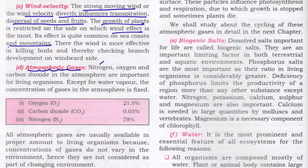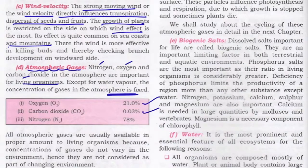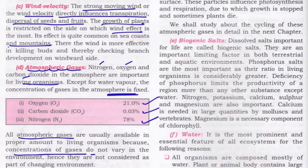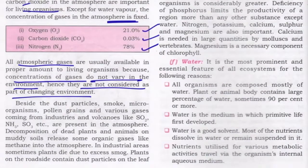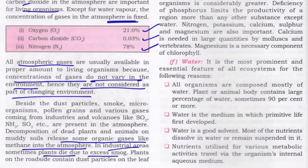Atmospheric gases — nitrogen, oxygen, and carbon dioxide in the atmosphere are important for living organisms. Except for water vapor, the concentration of gases in the atmosphere is fixed: oxygen is 21%, carbon dioxide is 0.03%, and nitrogen is 78%. Since these concentrations do not vary, they are not considered part of a changing environment. However, the decomposition of dead plants and animals on muddy soils releases organic gases like methane, and in areas near industrial zones, plants can die due to excess smoke.